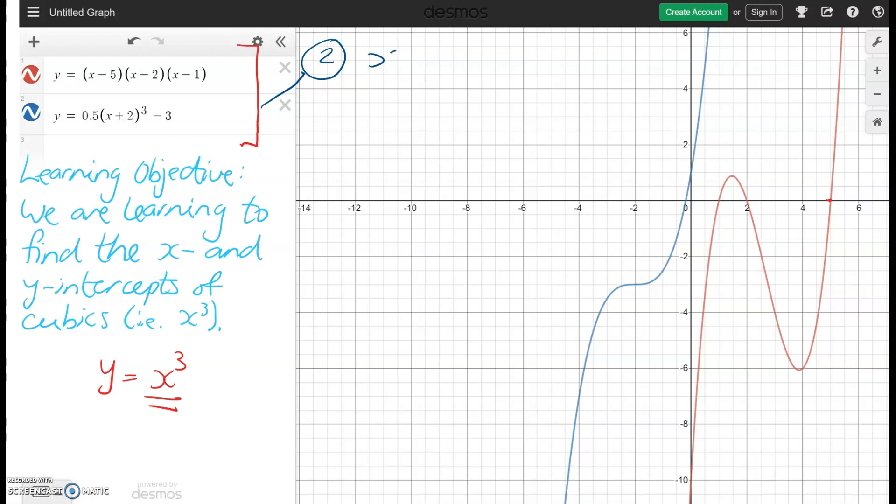We're going to start off with the x intercepts. And at that point, we know y is always going to be equal to zero. And we can visually inspect our graph, and we know the x intercept. We can only see one, and we know it's going to be slightly less than zero. But let's have a look how it goes. So we're going to put in zero is equal to 0.5 of x plus two cubed minus three.